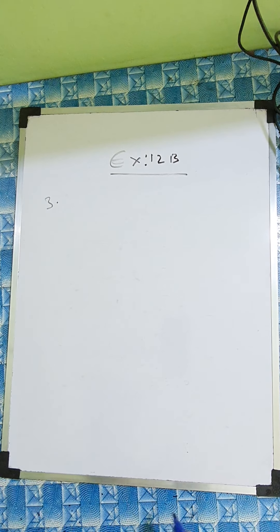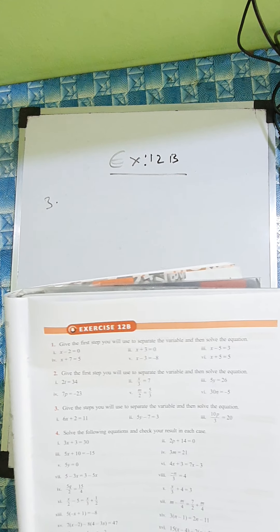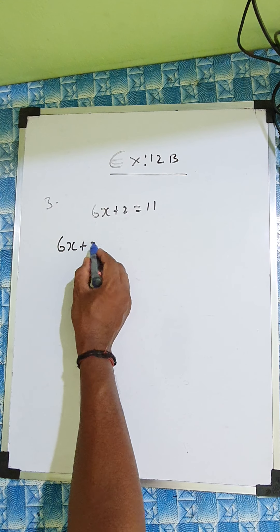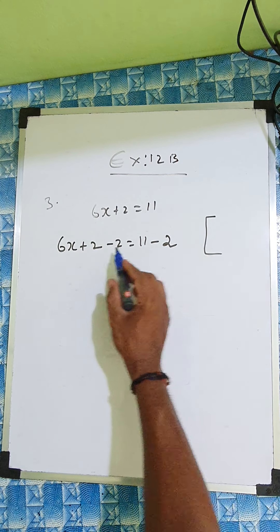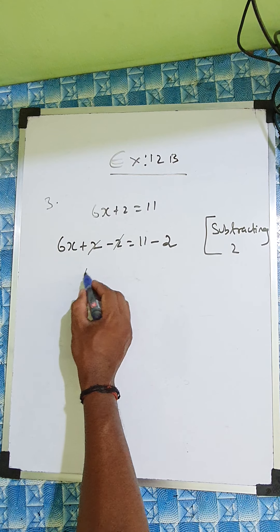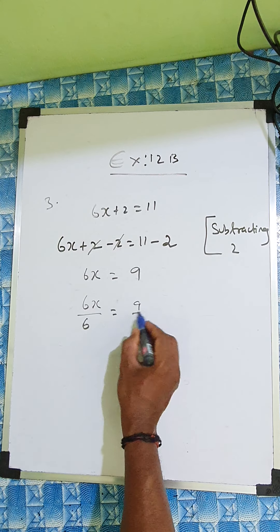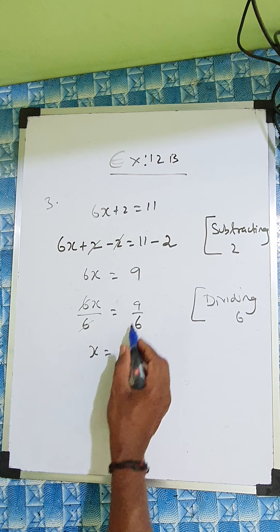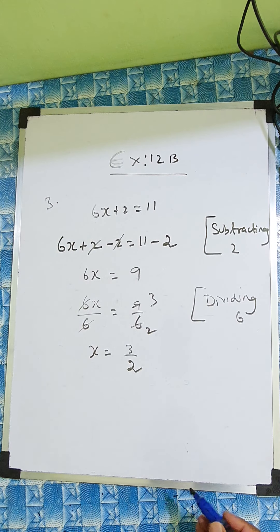Now question number 3. Give the steps you will use to separate the variable and solve the equation: 6x plus 2 equal to 11. So what you do here: 6x plus 2, put minus 2 on both sides — subtracting 2 from both sides. So these 2 cancel, 6x equal to 11 minus 2 is 9. Now we divide by 6 on both sides. So 6x cancels, x equal to 9 by 6. We can simplify — answer is 3 by 2.